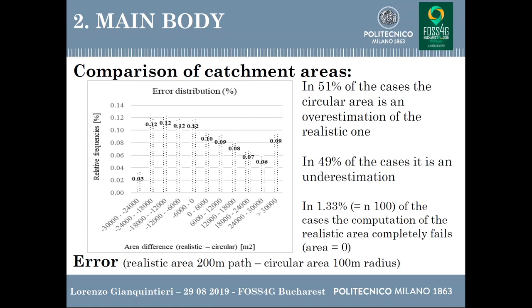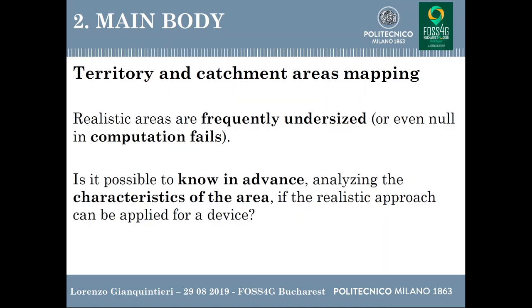Now a study of the error distribution. The error is considered to be the difference between the realistic area and the circular area. As you can see, it can be both an overestimation or an underestimation — it is very different. Realistic areas are frequently undersized or even null because there are some computation failures where the resulting area is zero. So we asked ourselves: is it possible to know in advance, for each single device, whether it will be possible to compute the realistic area or whether it is better to use the circular one?